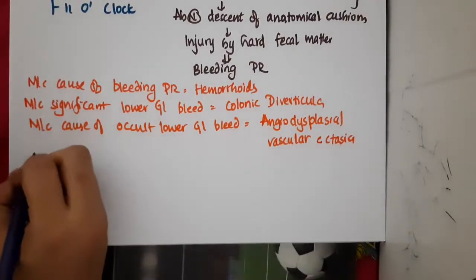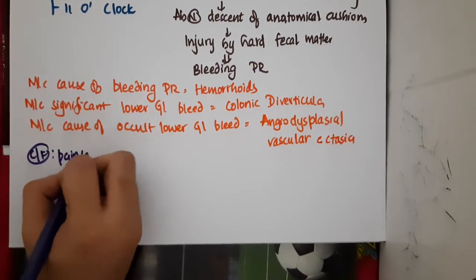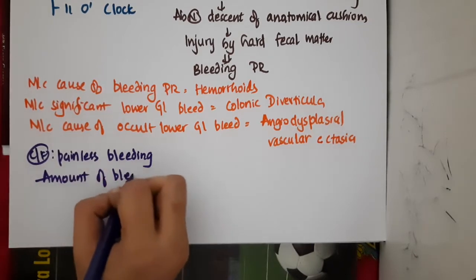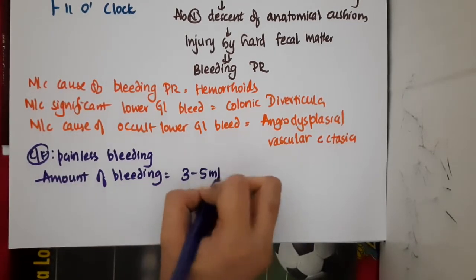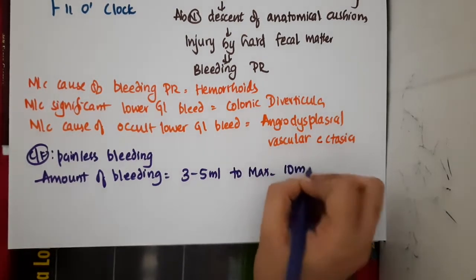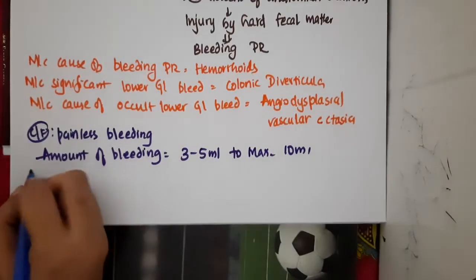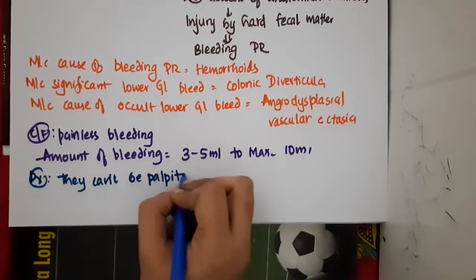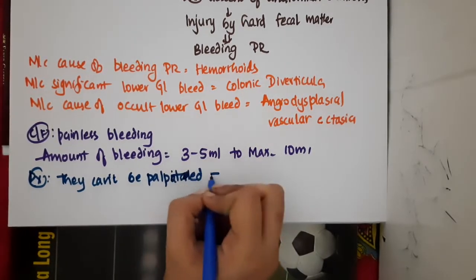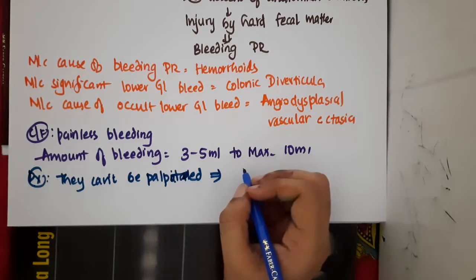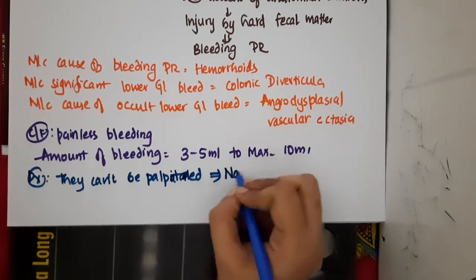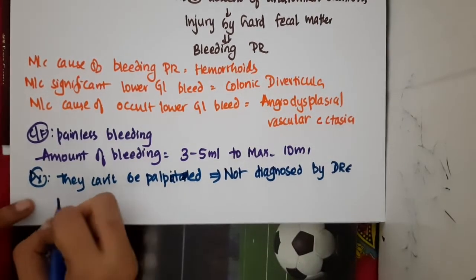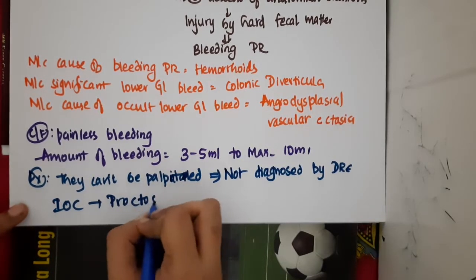The most common clinical feature of hemorrhoids is painless bleeding. The amount of bleeding is around 3 to 5 ml, up to a maximum of about 10 ml. For diagnosis: hemorrhoids cannot be palpated, so they are not diagnosed by digital rectal examination. The investigation of choice is proctoscopy.